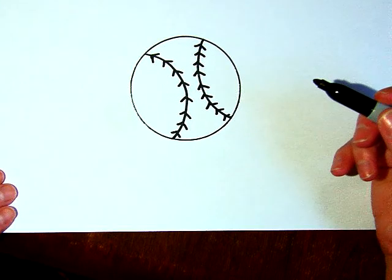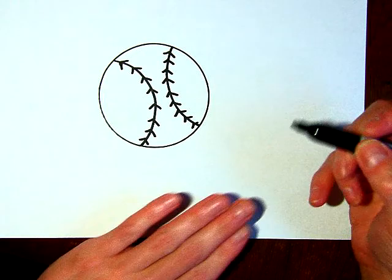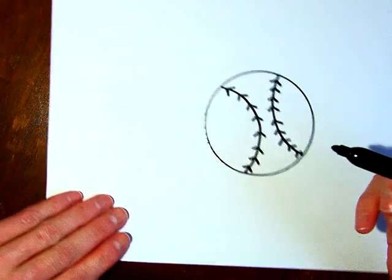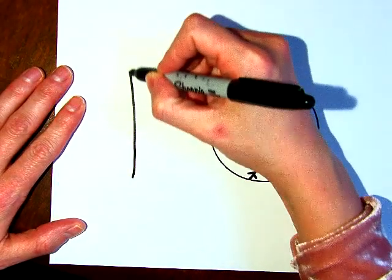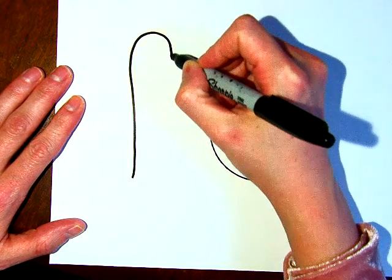To go with our baseball, I'm going to draw a bat. Now this is not going to be a good scale model because my bat is going to be much smaller, but that's okay. Go up, go out a little bit, come back.